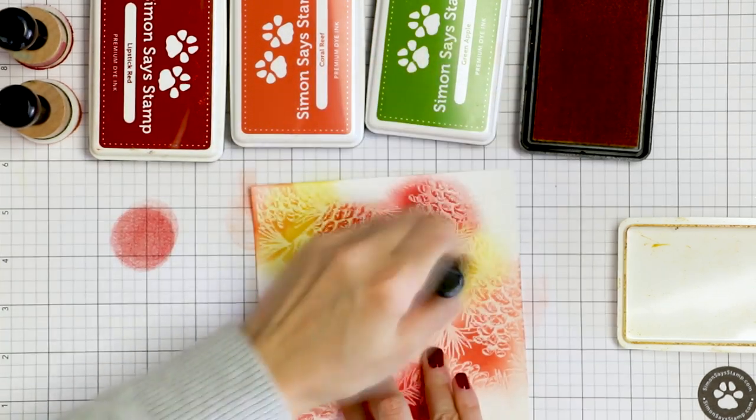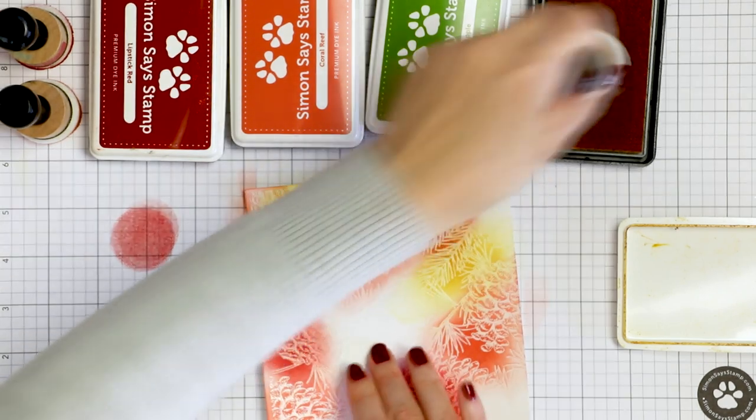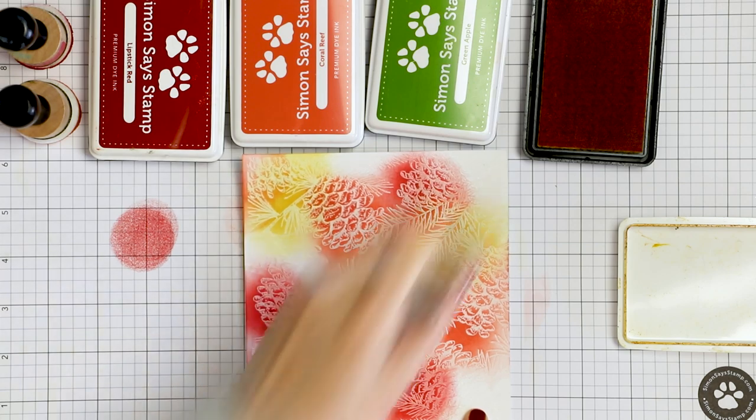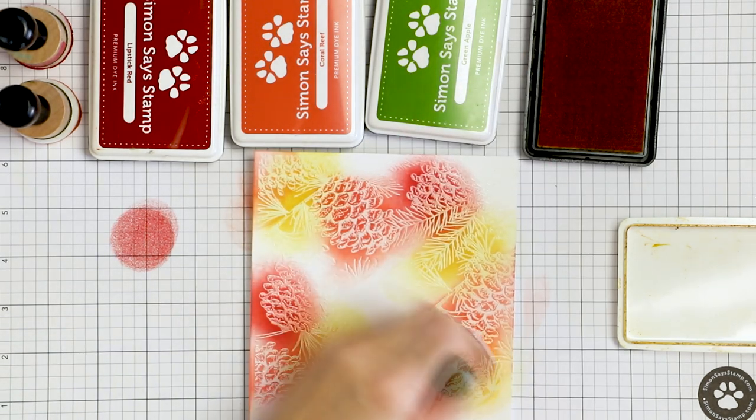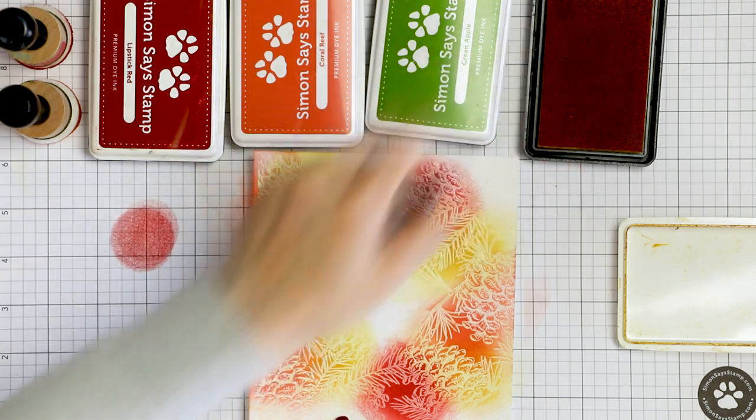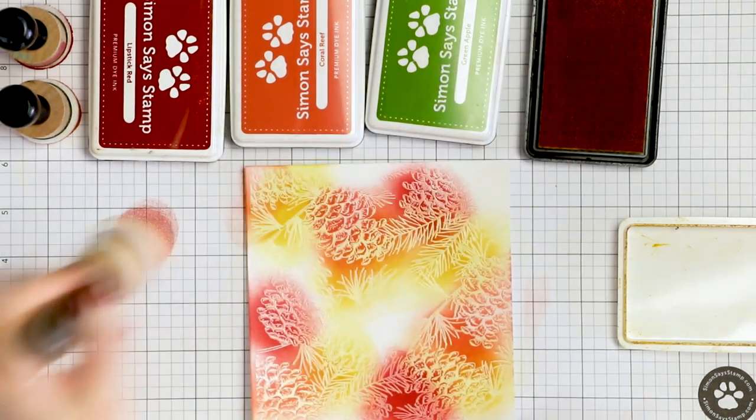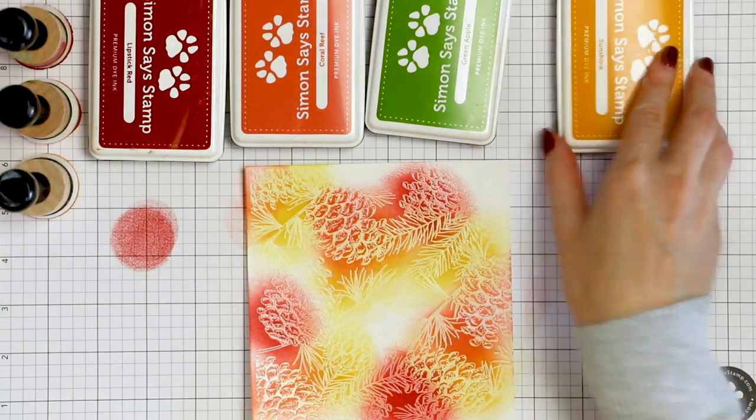I am using Ranger round ink blending tools for the ink blending but I have these Spellbinders foams attached to them so not the Ranger foam. The Spellbinders foam is made from a different material and it sort of resembles a makeup sponge so it applies and blends the ink much better.